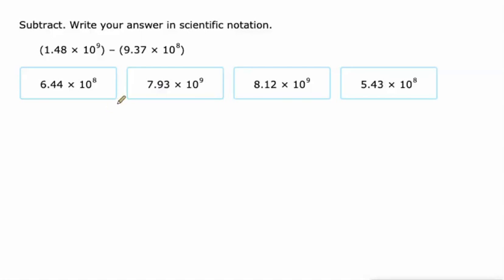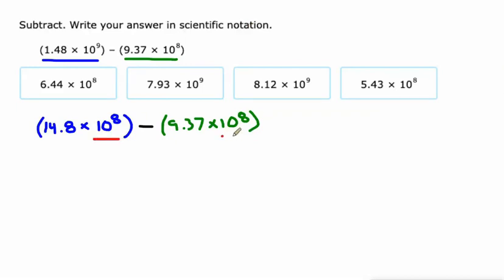So where it gets tougher is when the powers of 10 aren't the same. We're going to make the powers of 10 the same. I'm going to turn this into 14.8 times 10 to the eighth. If I increase this first factor by a power of 10, I have to decrease the second factor by a power of 10. And from that, I'll subtract this 9.37 times 10 to the eighth.